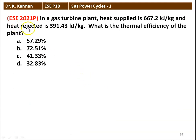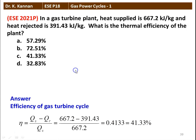The next question from the 2021 question paper: in a gas turbine plant, heat supplied is 667.2 kJ/kg and heat rejected is 391.43 kJ/kg. What is the thermal efficiency of the plant? There are 4 options: 57.29%, 72.51%, 41.33%, 32.83%. Efficiency eta = (heat supplied − heat rejected) / heat supplied = (667.2 − 391.43) / 667.2 = 0.4133, which is 41.33%. The correct answer is option C.